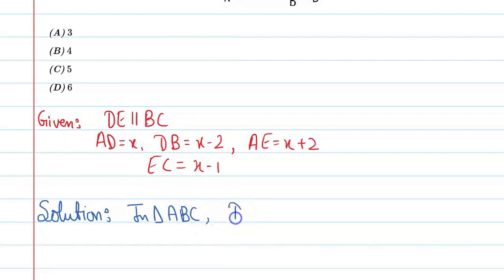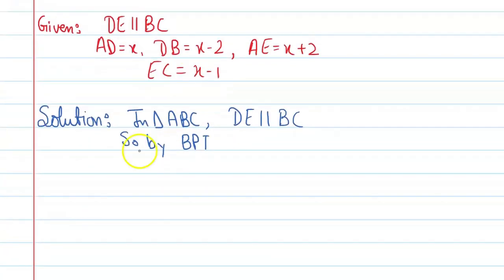In triangle ABC, DE is parallel to BC. So by BPT, BPT stands for basic proportionality theorem. You can say, AD upon DB is equal to AE upon EC.